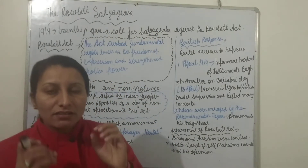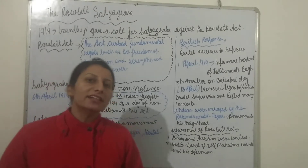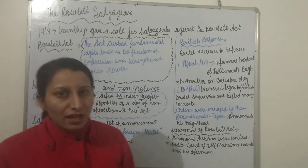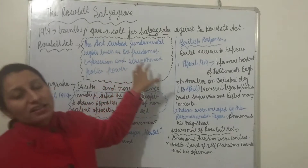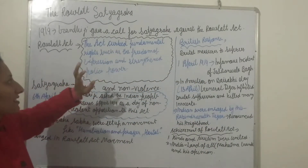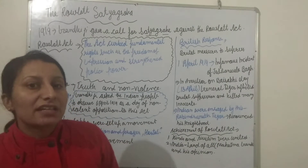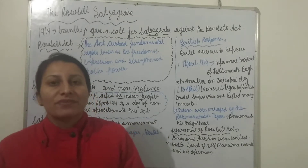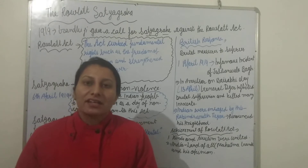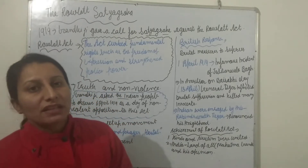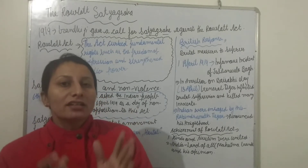So what was the Rowlatt Act and what were its drawbacks? All Indians were against this act because the British government had passed it in 1919. The reason was that this act destroyed and erased fundamental rights such as freedom of expression, and it strengthened police power. The police were given expanded powers under the Rowlatt Act.